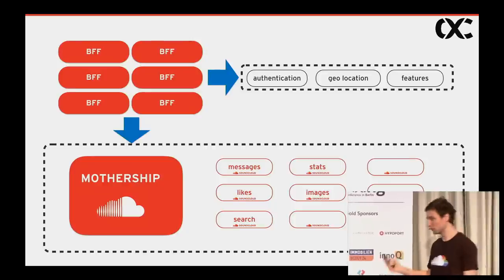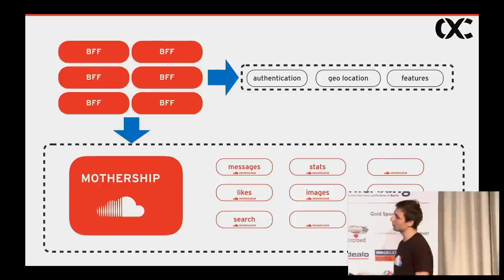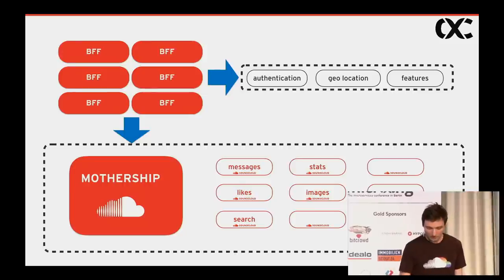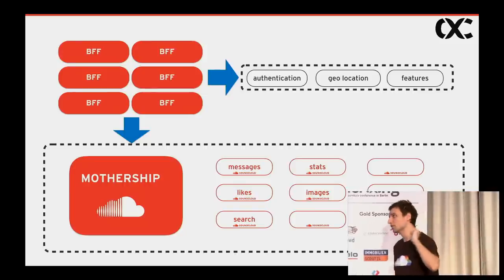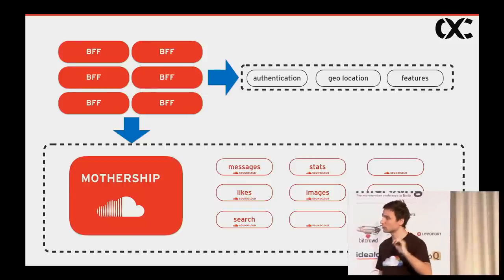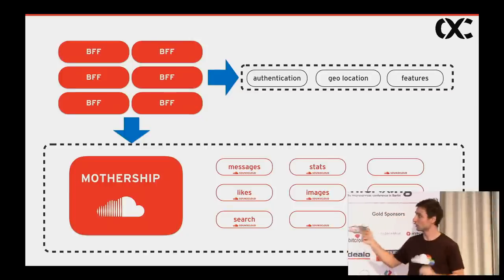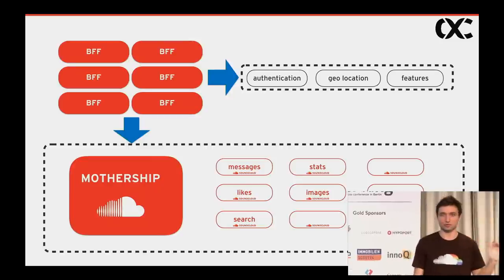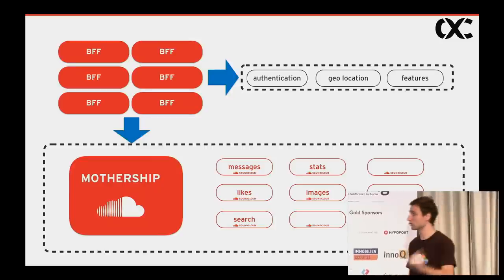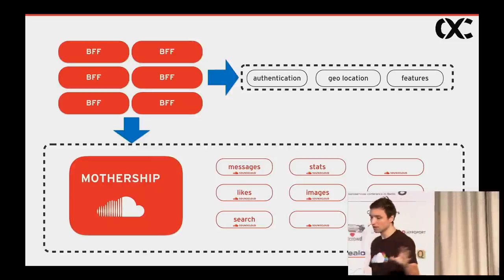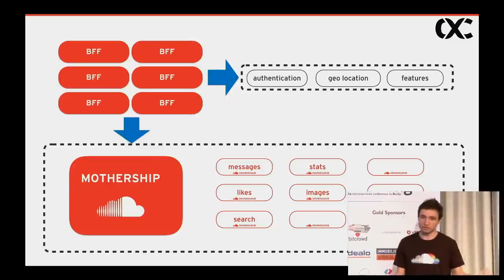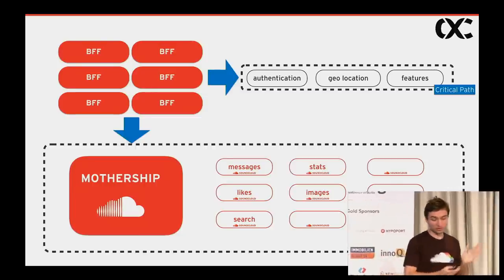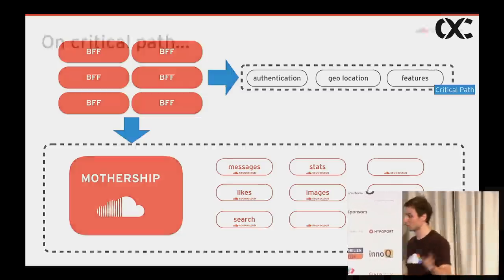Looking at the first step again: all of the BFF applications talk to the same set of microservices. So you can deduce that every request coming to the SoundCloud platform ends up on this set of microservices. Those microservices handle 100% of the traffic coming to SoundCloud's platform. Because of this high load, we call this layer our critical path.